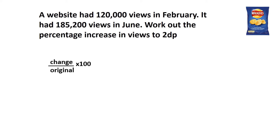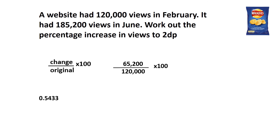Now let's look at our final example. A website had 120,000 views in February and 185,200 views in June. Work out the percentage increase in views to two decimal places. You can pause the video now if you'd like to work out the calculation. The change works out to be 65,200, and we divide that by the original 120,000 and multiply by 100 to get a percentage. To two decimal places, the answer is 54.33% increase.